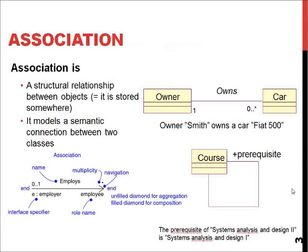Association, without any definition on what type it is, simply means there is a connection or communication between two objects. The association has optional additional indicators — keywords like 'owns' or 'is prerequisite' — to define when or how the association functions.